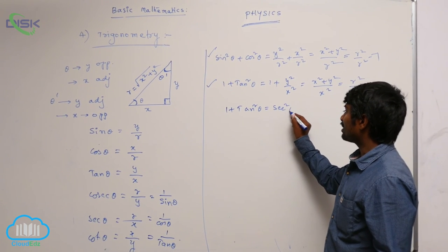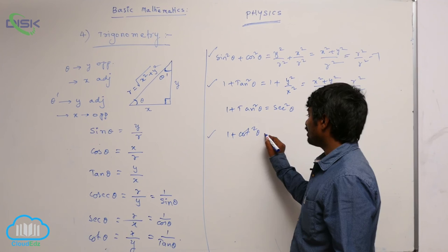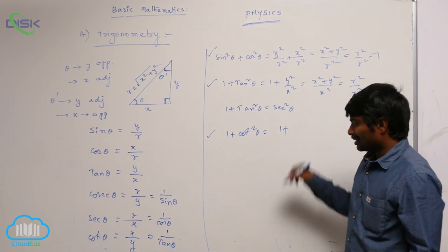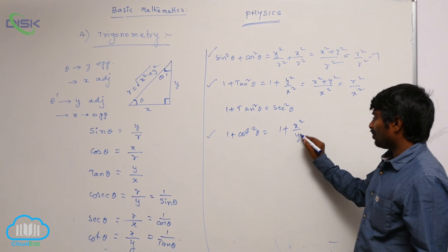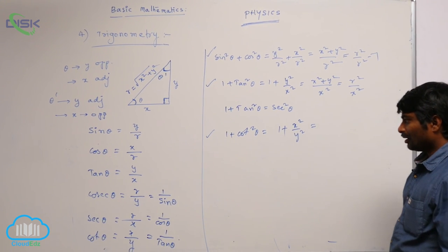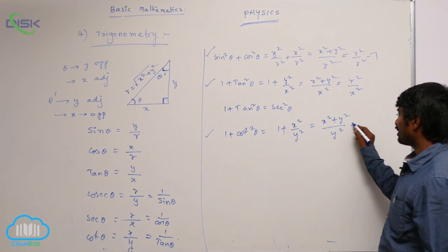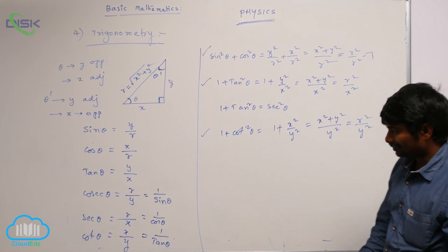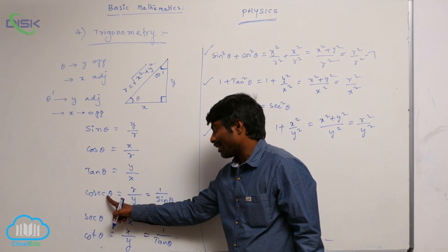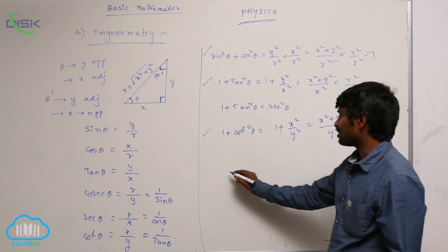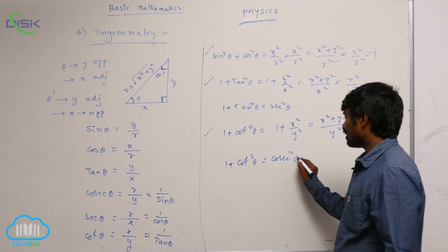The second identity is 1 plus tan squared theta equals secant squared theta. The third one is 1 plus cot squared theta: cot squared theta is x squared by y squared, so 1 plus cot squared theta equals x squared plus y squared by y squared, which is r squared by y squared. Since r by y is cosecant theta, r squared by y squared is cosecant squared theta. So 1 plus cot squared theta equals cosecant squared theta.